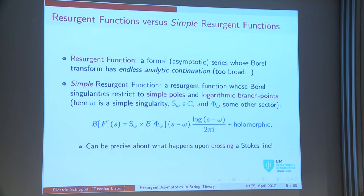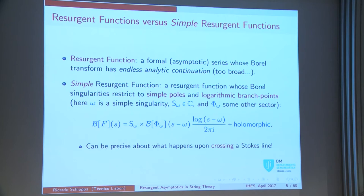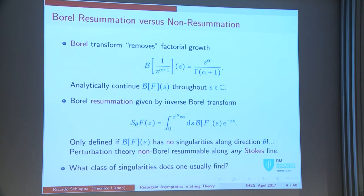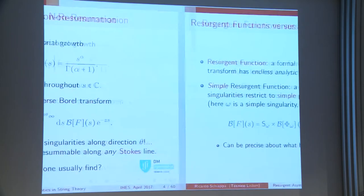Here's an example. Omega is some simple singularity, S is a complex number, and phi_omega is some other sector. Around omega, the Borel transform has a logarithmic branch point — that's the log — and in front of it a holomorphic function, which I understand as the Borel transform of some other sector phi_omega. With this, we can be very precise about what happens when you cross the Stokes line — the line where, when rotating theta in the Borel resummation, you cross the singularity.